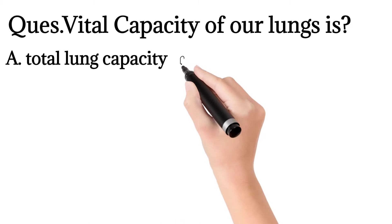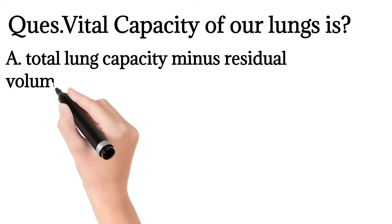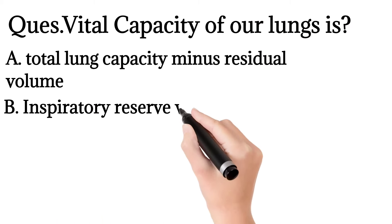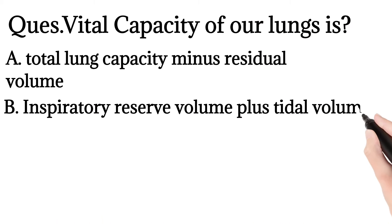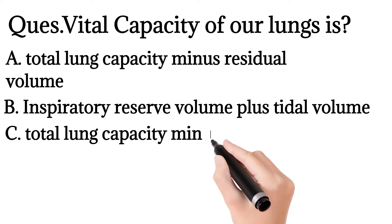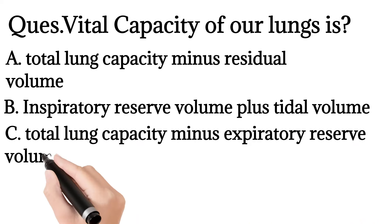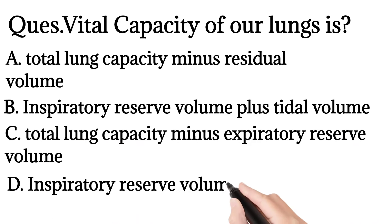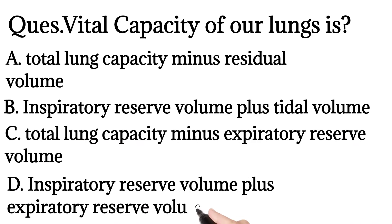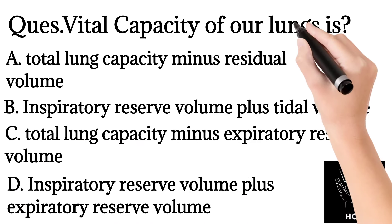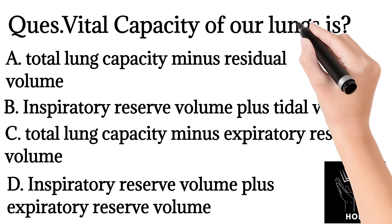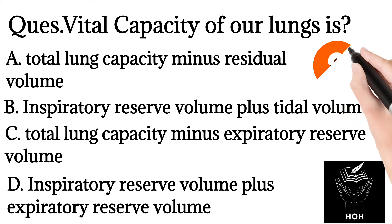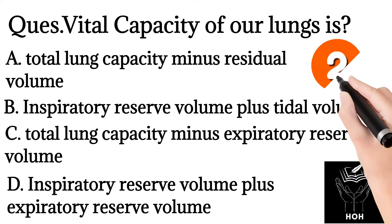2. Vital capacity of our lungs is: total lung capacity minus residual volume; inspiratory reserve volume plus tidal volume; total lung capacity minus expiratory reserve volume; or inspiratory reserve volume plus expiratory reserve volume.